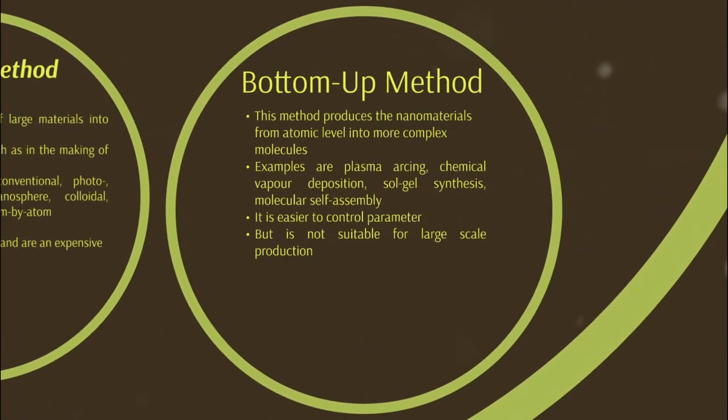The second method is the bottom-up method, which produces nanomaterials from the atomic level into more complex molecules. Examples include plasma arching, chemical vapor deposition, sol-gel synthesis, and molecular self-assembly. It is easier to control the parameters, but it is not suitable for large-scale production.